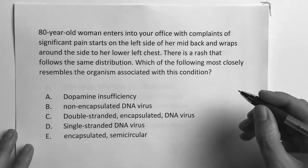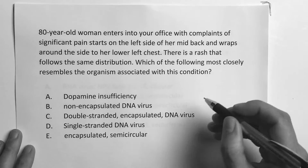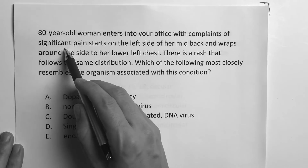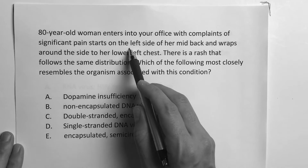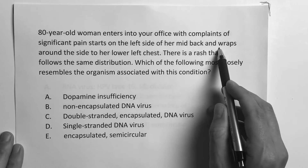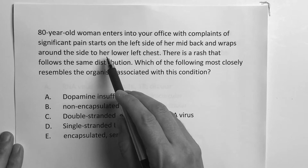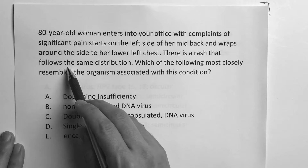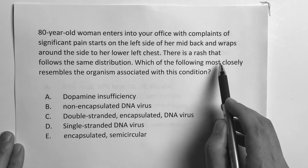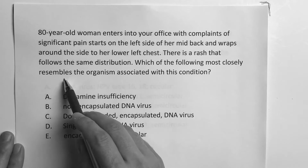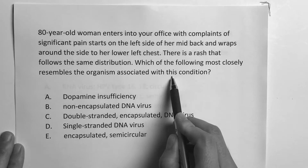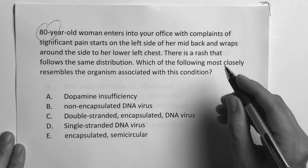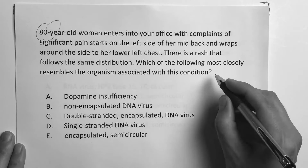Here go our DNA viruses. An 80-year-old woman enters your office with complaints of significant pain that starts on the left side of her mid-back and wraps around to the side, to her lower left chest. There is a rash that follows the same distribution. Which of the following most closely resembles the organism associated with this condition? So, kind of an older person, got this rash that wraps around — it's painful.